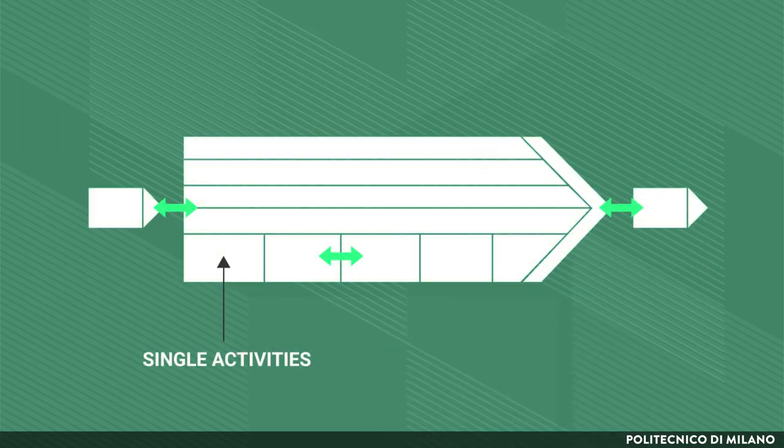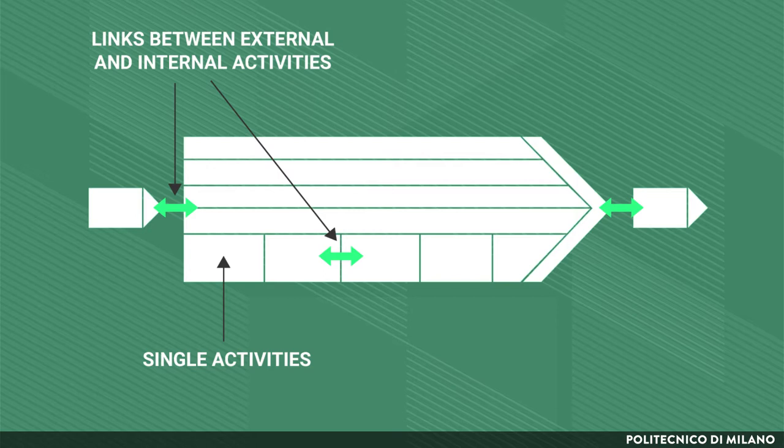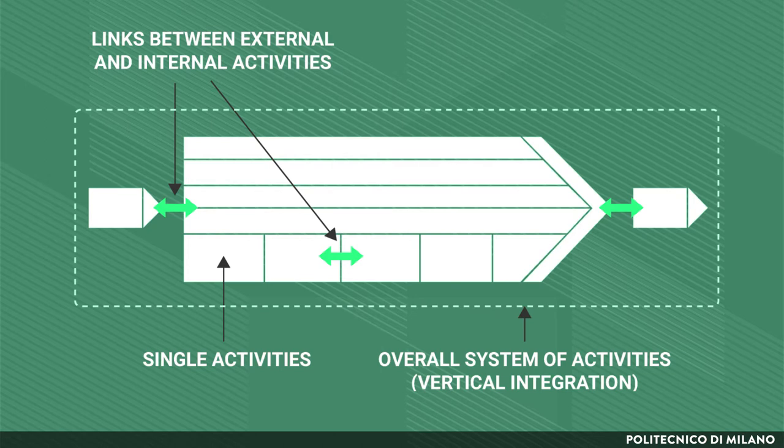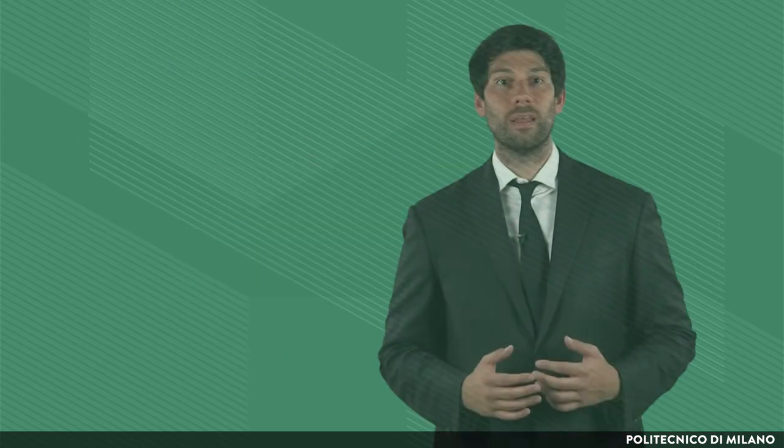More specifically, the model tries to identify the differentials of cost and value through an analysis that considers three levels. First, the way single activities are designed and carried out. Second, the links between the internal activities and such internal activities with those of the customers and suppliers. And third, the overall system of activities, also called level of vertical integration.